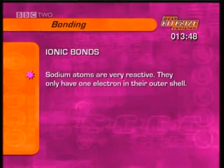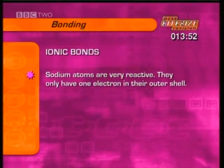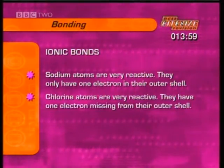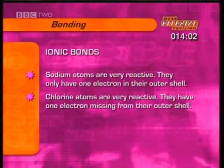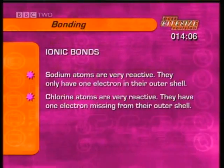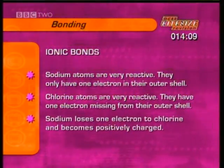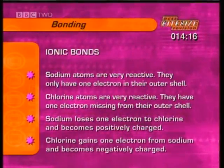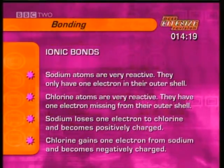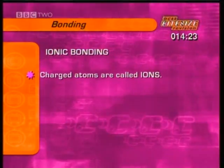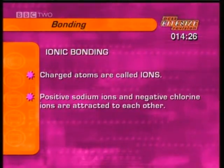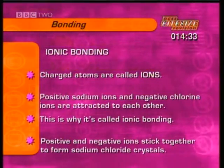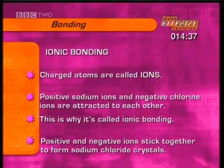In the clip, we saw that sodium and chlorine are both very reactive elements. Sodium is very reactive because its atoms have only one electron in their outer shell, and chlorine is very reactive because its atoms have seven electrons — one missing from their outer shell. Sodium easily loses one electron to chlorine and becomes positively charged, while chlorine easily gains one electron from sodium and becomes negatively charged. Charged atoms like these are called ions, and the positive sodium ions and negative chlorine ions are attracted to each other — that's why it's called ionic bonding. Large numbers of positive and negative ions stick together to form sodium chloride crystals, common salt.